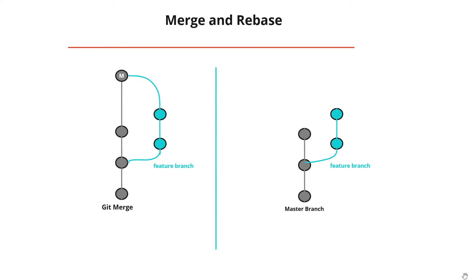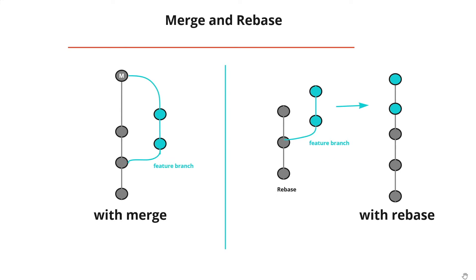With git rebase, you have the same feature branch from master with a couple of commits — the same scenario as with git merge. What rebasing does is take all the commits from the feature branch and move them to the top of the master branch. Unlike git merge, which squashes changes into one merge commit, rebasing duplicates them as new commits on top of the master branch, effectively rewriting the history.